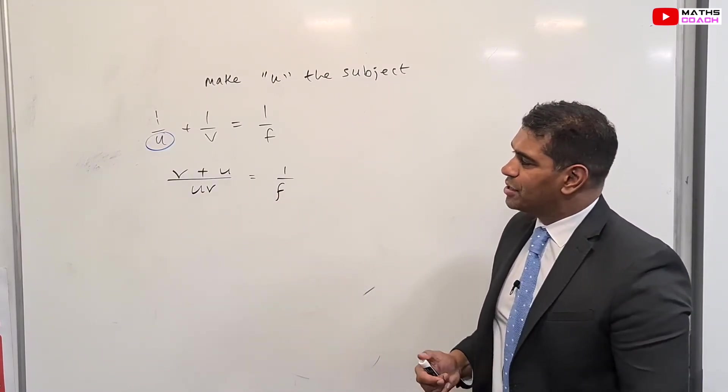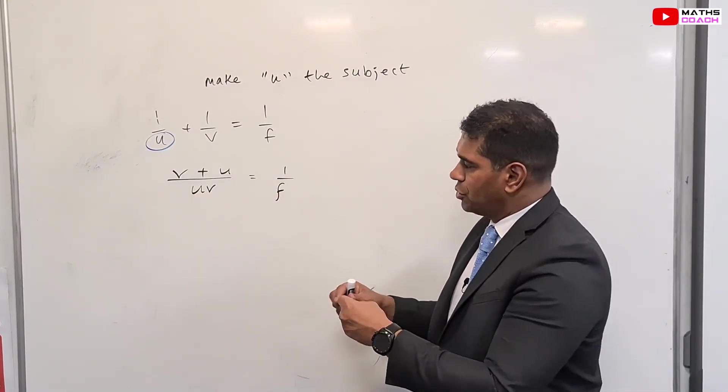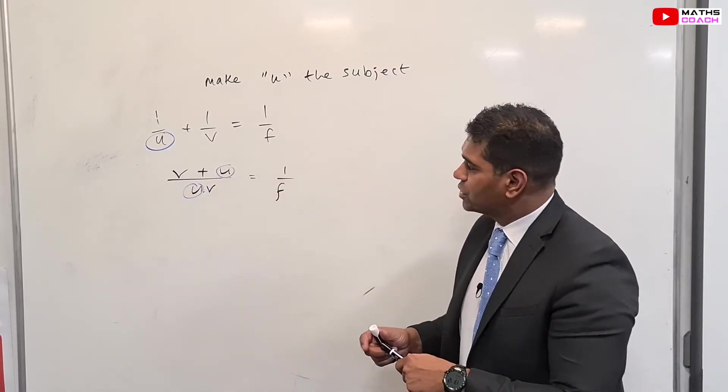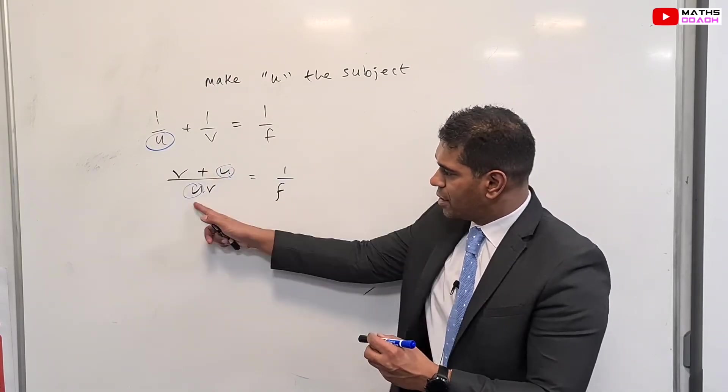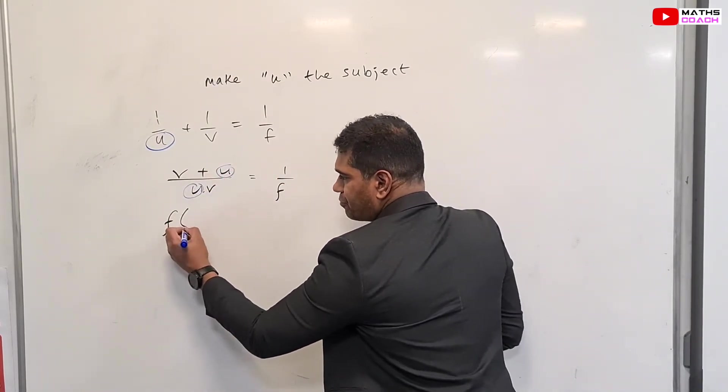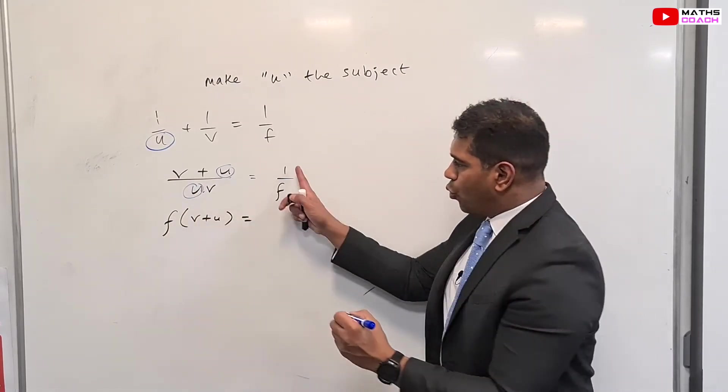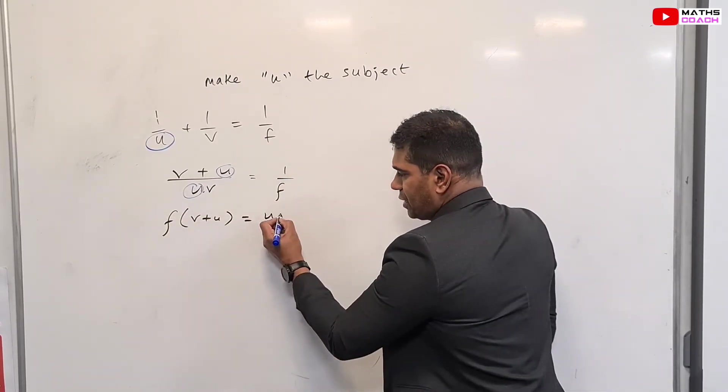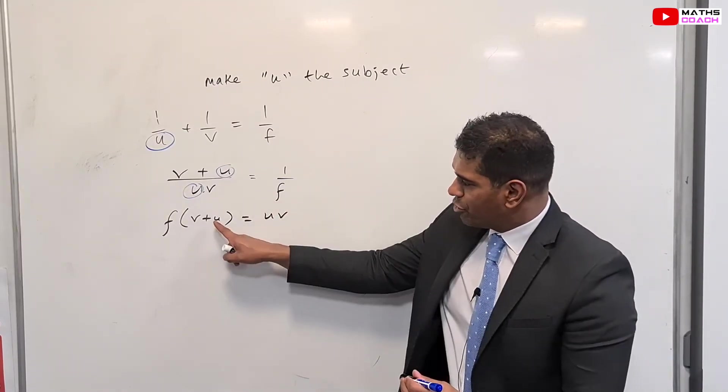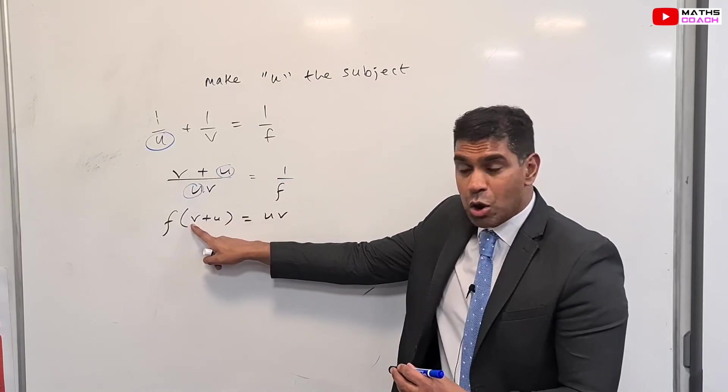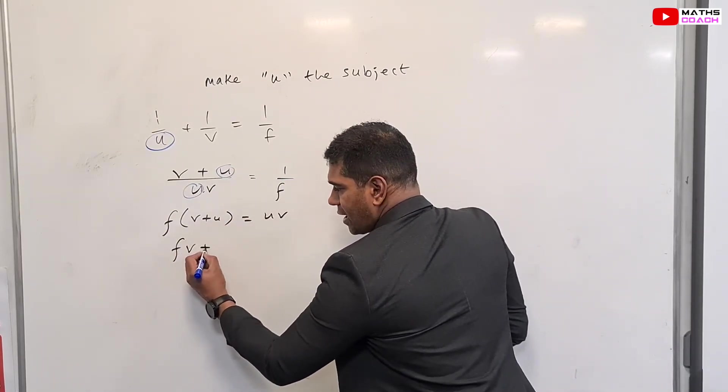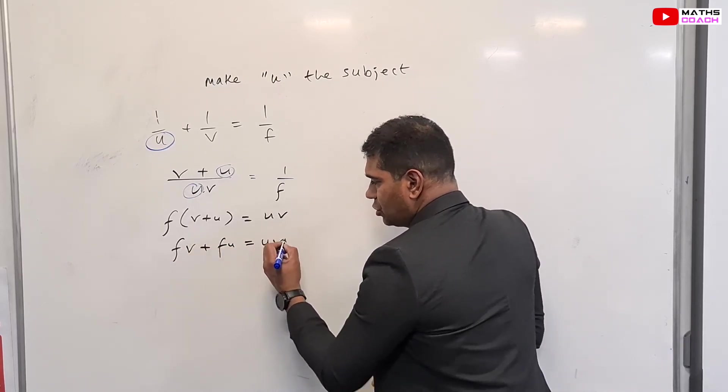So what we now need to do is make this U and this U as 1 and make it into a subject. So we can now cross multiply these two. So I'm going to start at the top left and bottom right. I have an F multiplied by V add U equals 1 times UV, which is simply UV. What's our next stage? Well, remember we need to get the U's on its own, but we have to open up the bracket. So let's multiply this out with FV add FU equals UV.